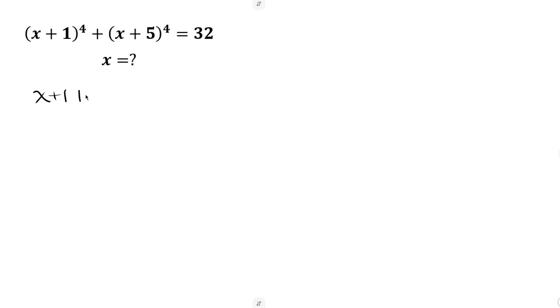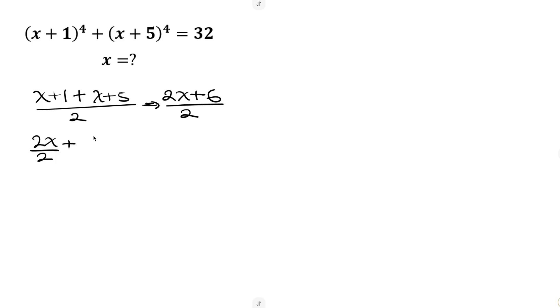How do we do that? We find the middle number between x plus 1 and x plus 5. To find the middle number, we write x plus 1, add it to x plus 5, and then divide the expression by 2. This results to 2x plus 6 divided by 2. We can separate the fraction: 2x over 2 plus 6 over 2, which gives x plus 3. So x plus 3 is the middle number between x plus 1 and x plus 5.